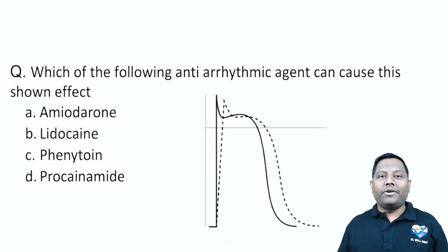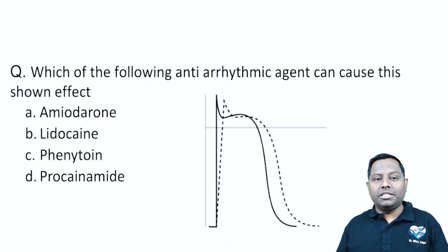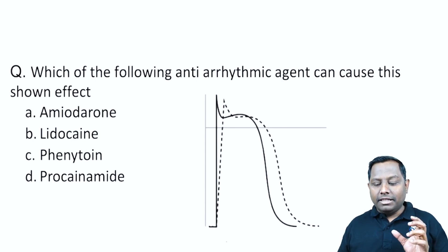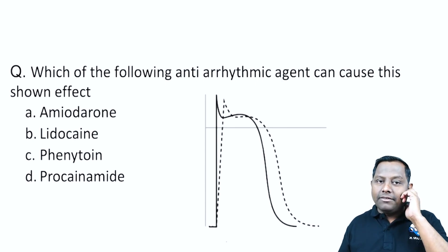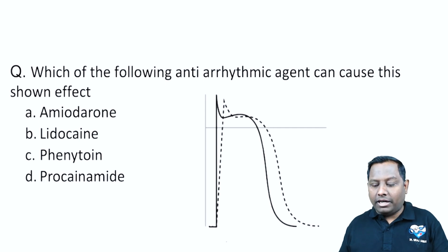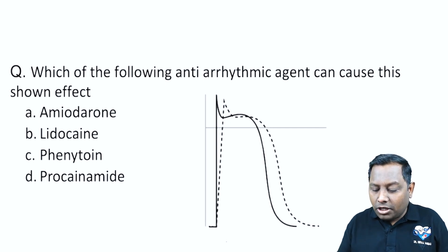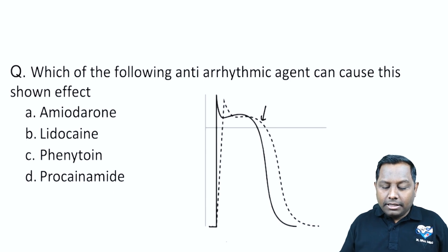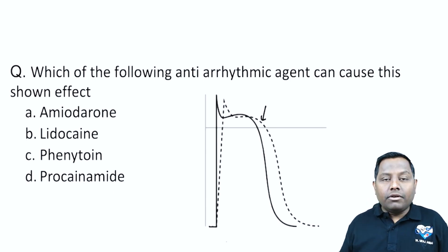This question was also asked in the 2022 NEET/FMG examination and is equally important for aspirants. They have given a graph of anti-arrhythmic drug action and asked which anti-arrhythmic drug can cause the shown effect. The shown effect they are asking about is the one with the dotted line.